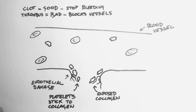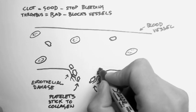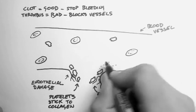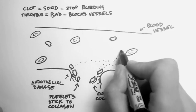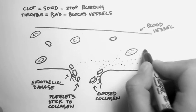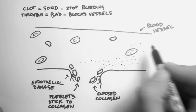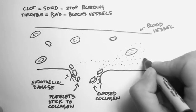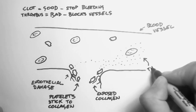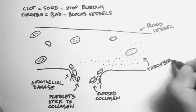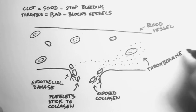Now when that happens, the platelets get activated, and they release a chemical out into the bloodstream, which calls on more platelets. This chemical is called thromboxane A2. You may have heard of this before in the arachidonic acid pathway.